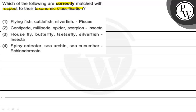Option 3: Housefly, butterfly, tsetse fly, silverfish — Insecta. Option 4: Spiny anteater, sea urchin, sea cucumber — Echinodermata. To solve this question, the key concept we need is to know about the phylum and classes of the given animals.